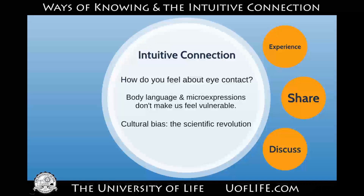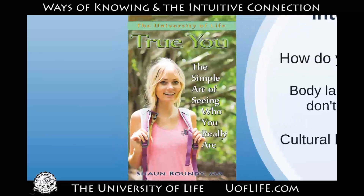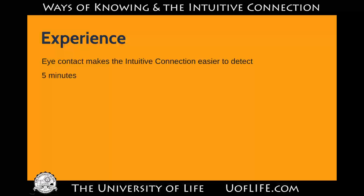So we'll do three things: first you'll experience it, I'll give you all the steps, then you'll pair up with a partner and try this, share with each other, and then I have some discussion questions. This is also all in my book 'True You.' First, experience: eye contact makes the intuitive connection easier to detect. If you're new to this, it makes it a lot easier to recognize the feelings and impressions hitting your brain and interpret them. You're going to look at each other for five minutes — set a timer — and if that makes you uncomfortable, remember that's just more evidence that there's something to this.